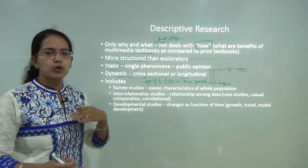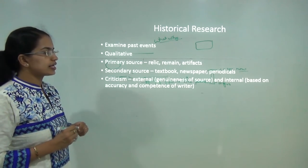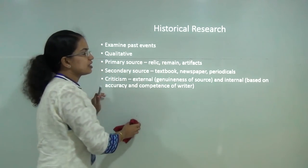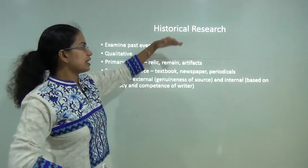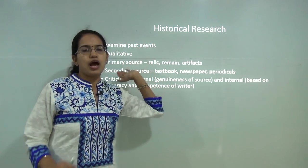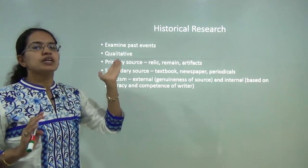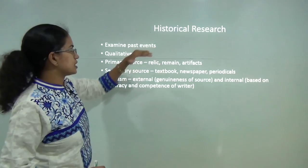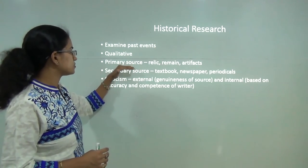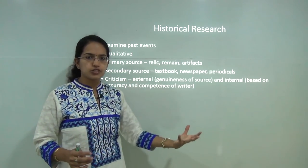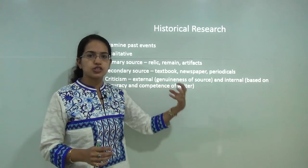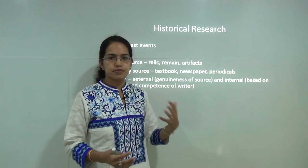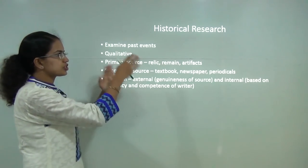The next is historical research. As the name suggests, it deals with past events. Since it deals with past events, it is more qualitative — you are not exactly working with data and numbers. An example would be studying what Harappans used to do, their lifestyle, and how it compares to our lifestyle today. Data for historical research can be collected from two sources: primary sources, which are direct sources such as artifacts, remains, or relics from ancient times.